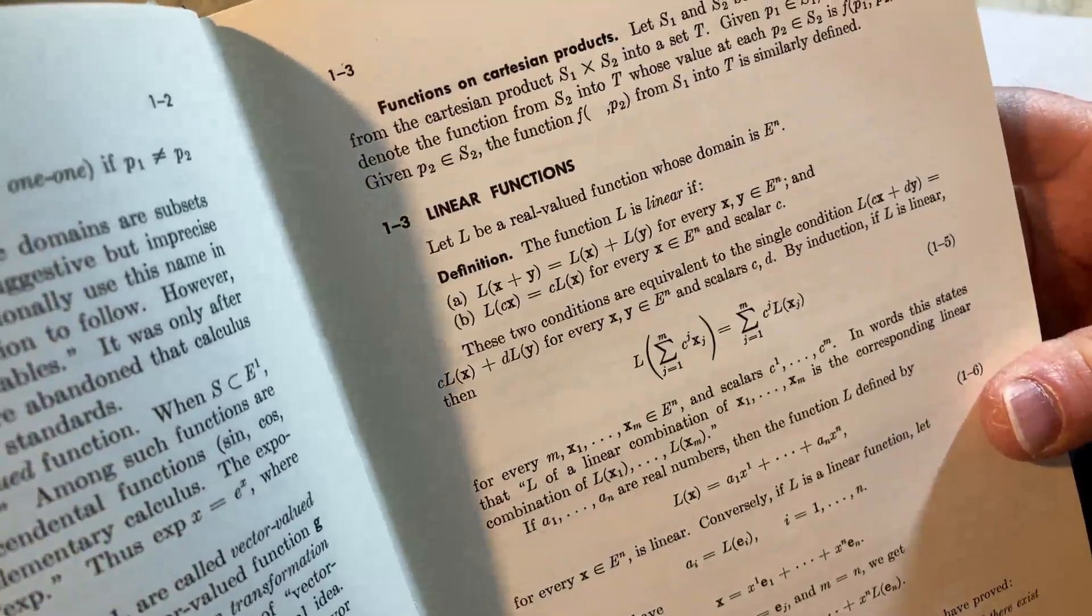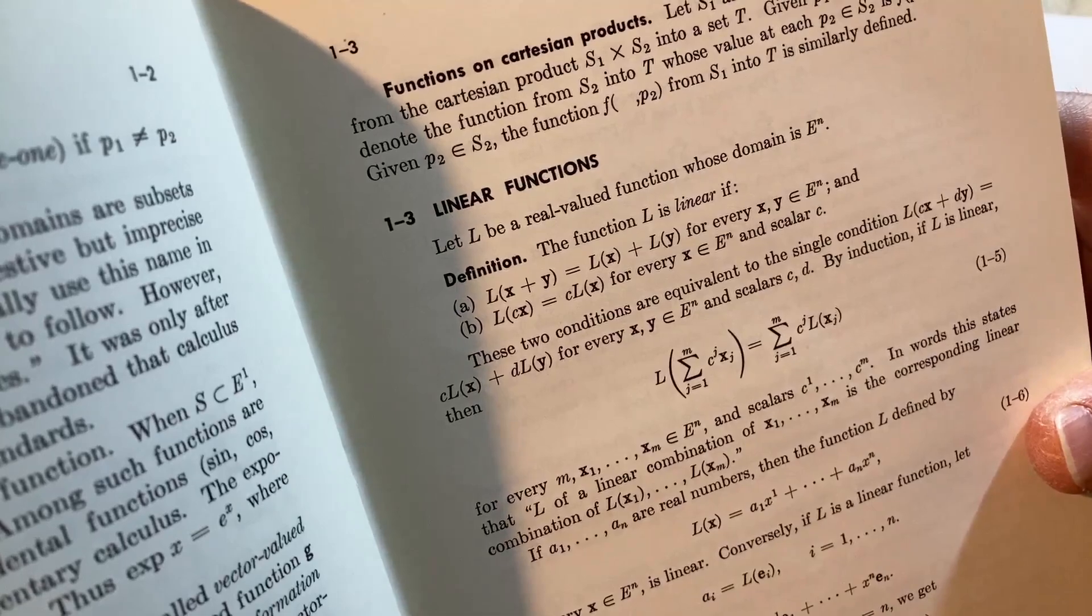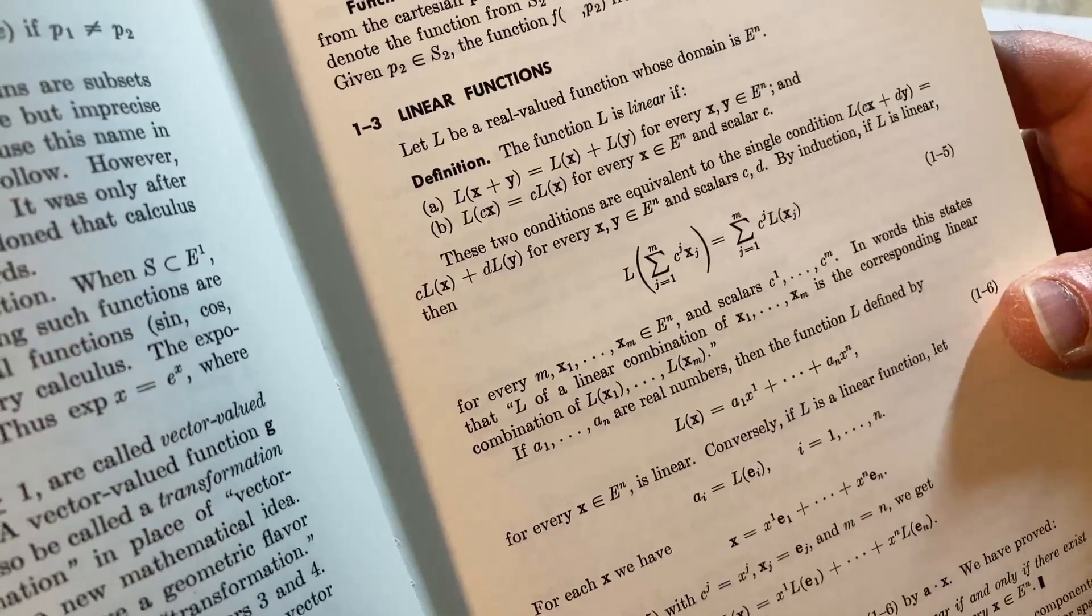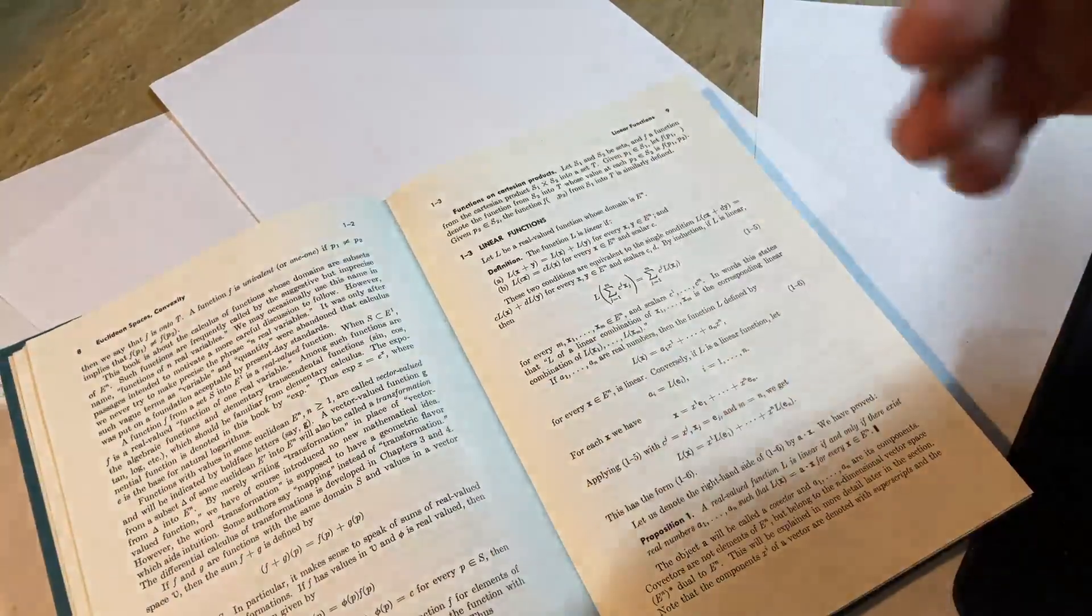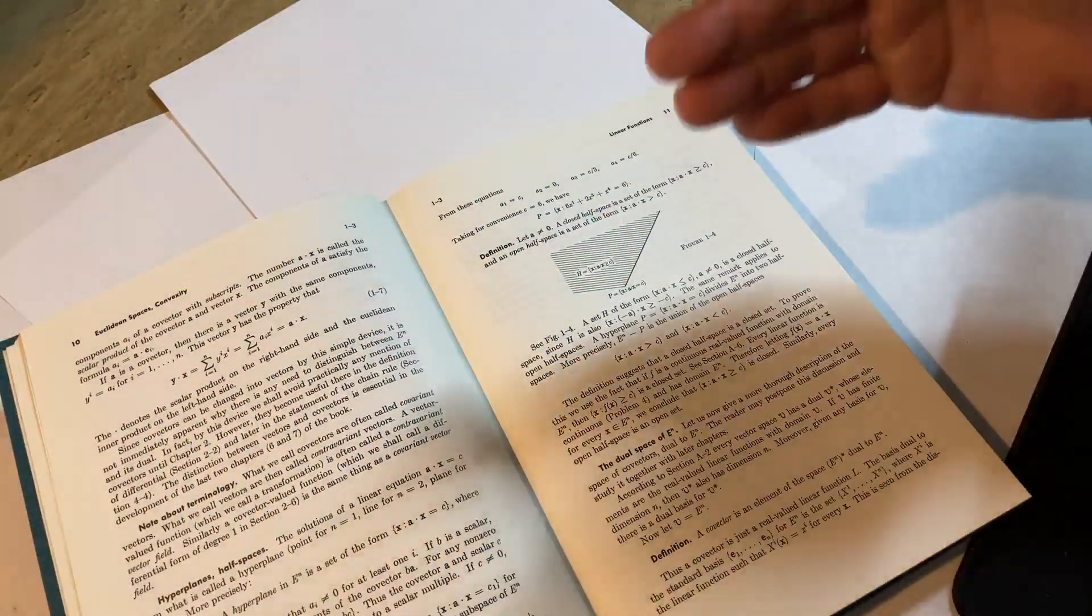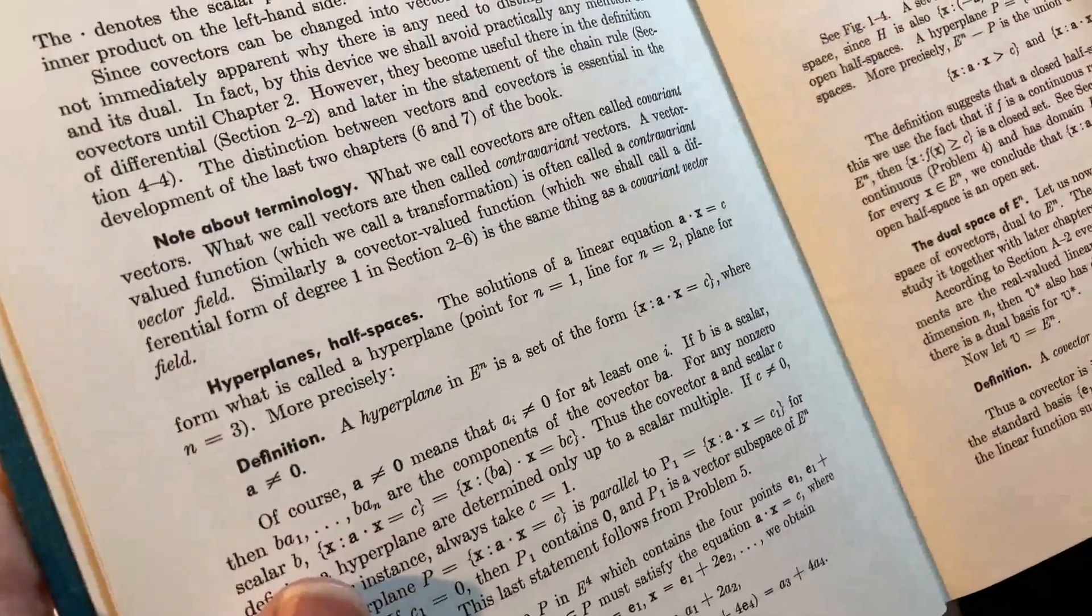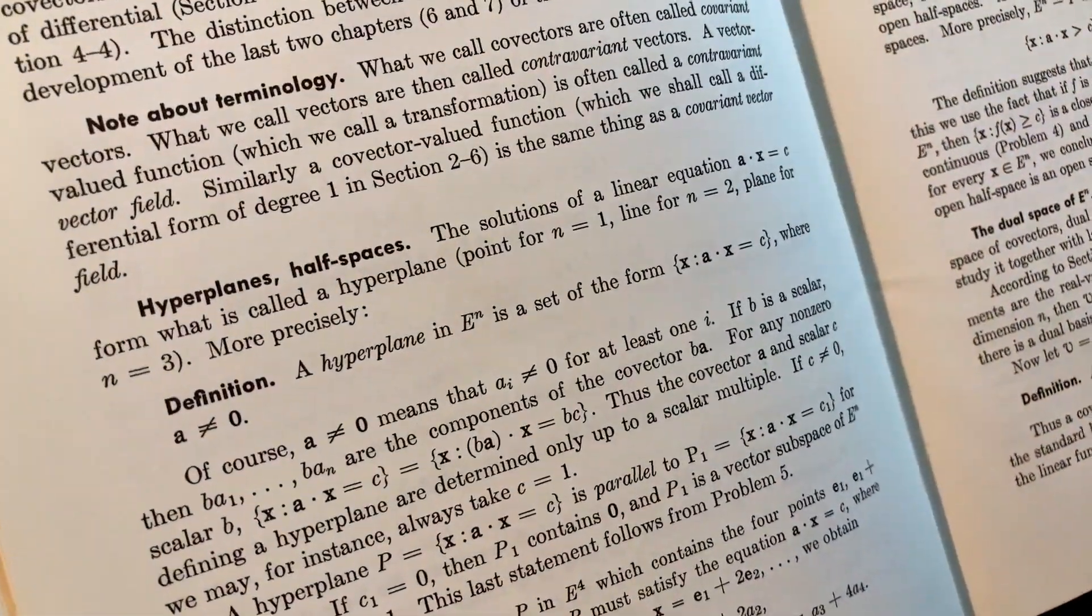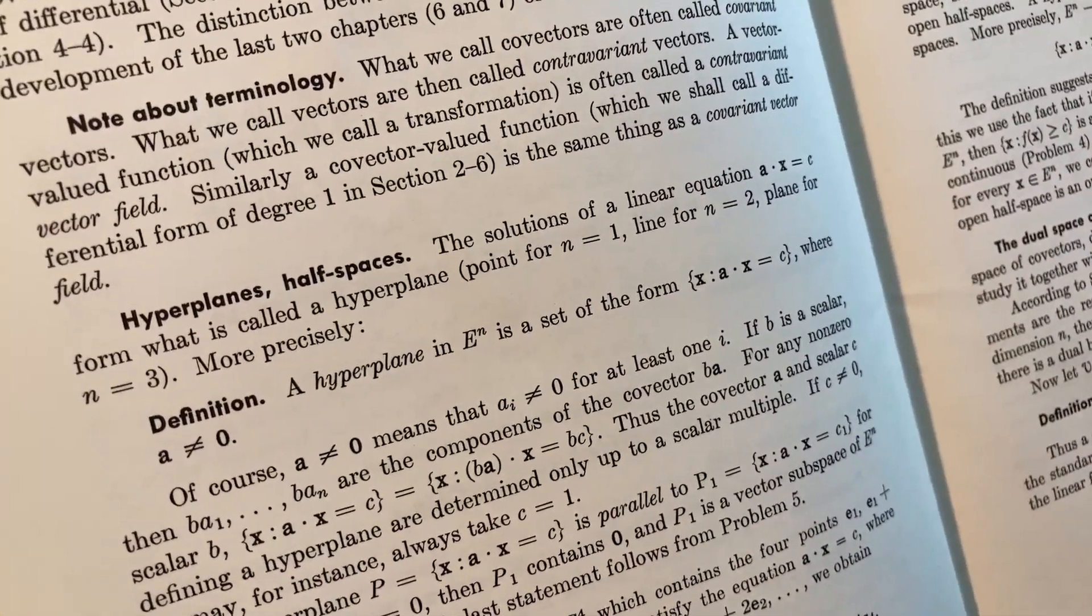Linear functions. Let L be a real valued function whose domain is E to the N. The function L is linear if... This is something that you may have seen if you've studied linear algebra. It has a lot of mathematics, and you see the format, it's just a very clean math book. It's got examples, definitions, proofs. Talks about hyperplanes and half spaces.